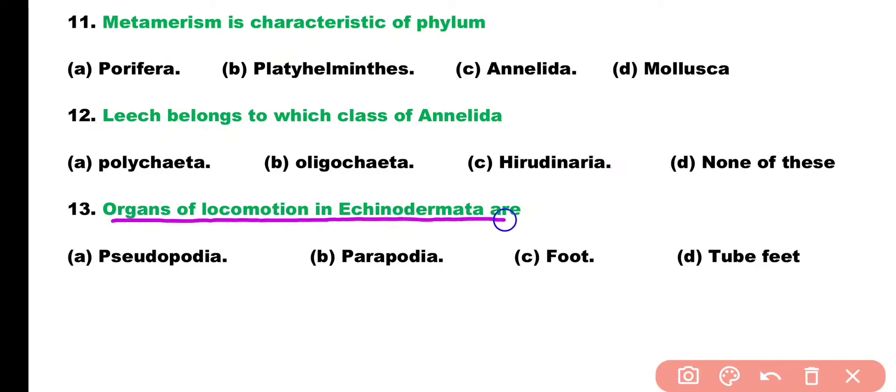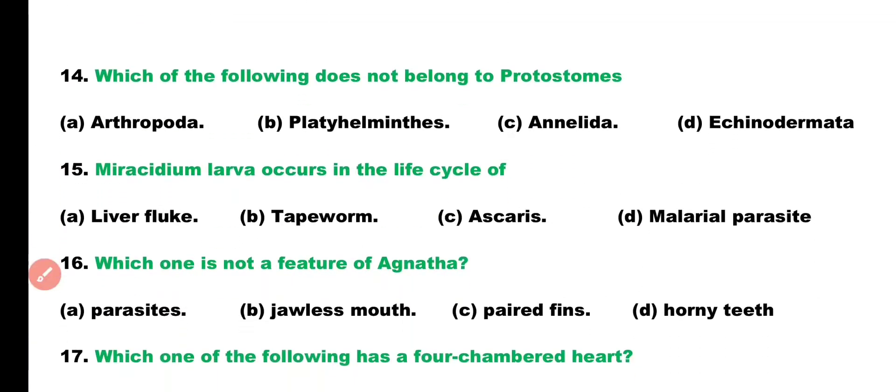Question number 13. Organs of locomotion in Echinodermata are: Pseudopodia, Parapodia, Foot, or Tube feet? Correct answer is Option D. Tube feet is the locomotory organ of members of Phylum Echinodermata.